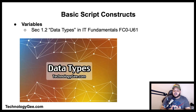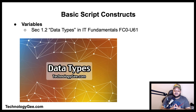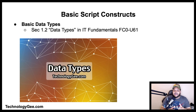Variables are used to store information to be referenced and manipulated in a computer program. They provide a way of labeling data with a descriptive name so programs can be understood more clearly. The sole purpose of variables is to label and store data in memory so it can be used throughout your program. For more on variables, check out my video titled 'Data Types' in the IT Fundamentals playlist, video 1.2.